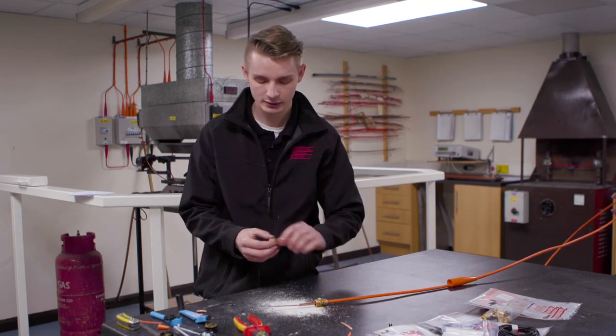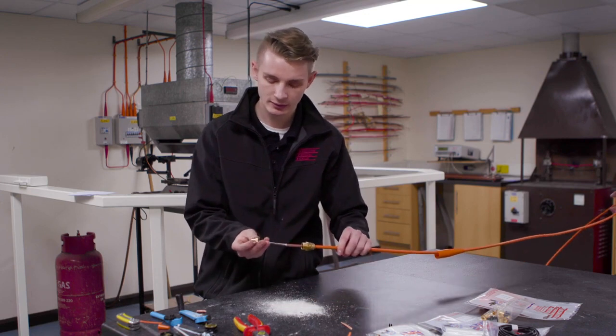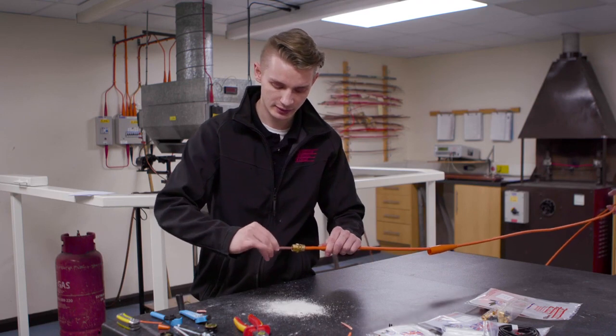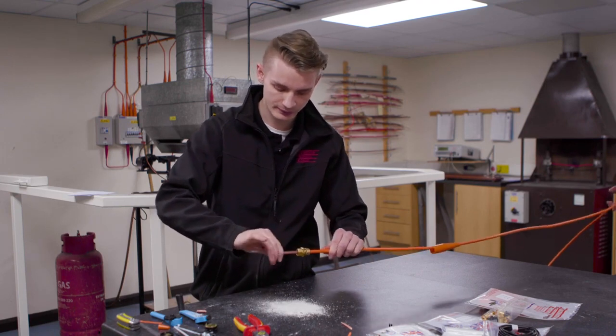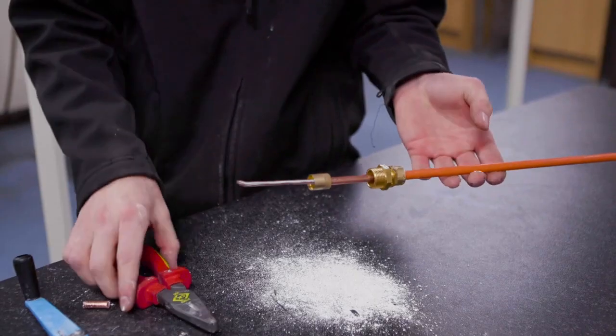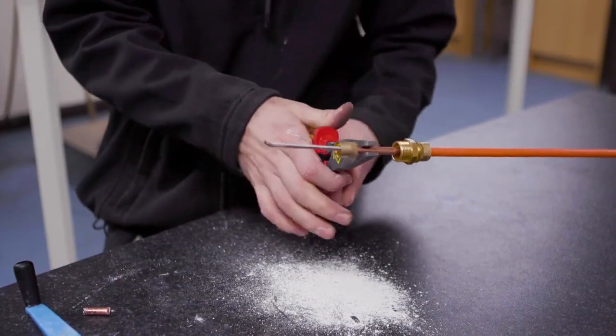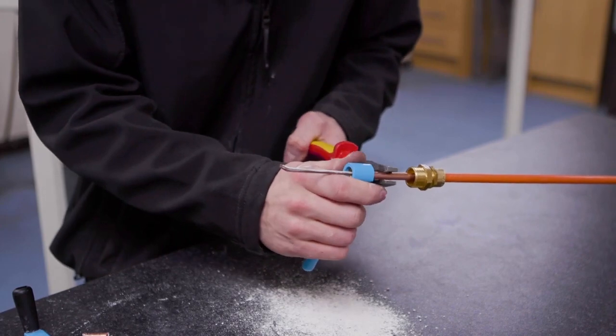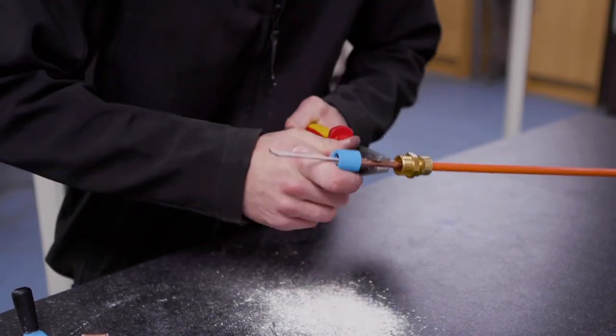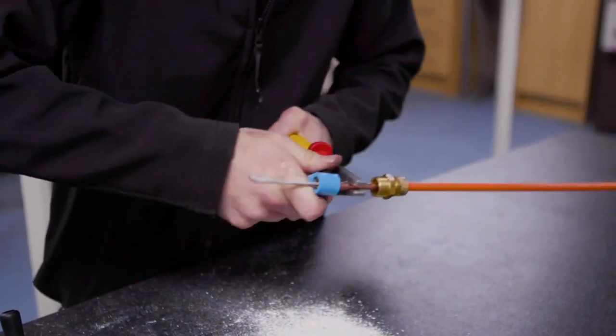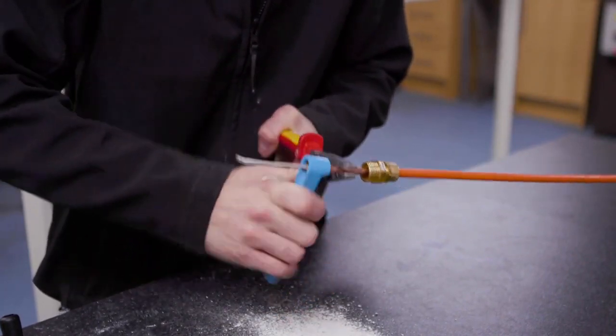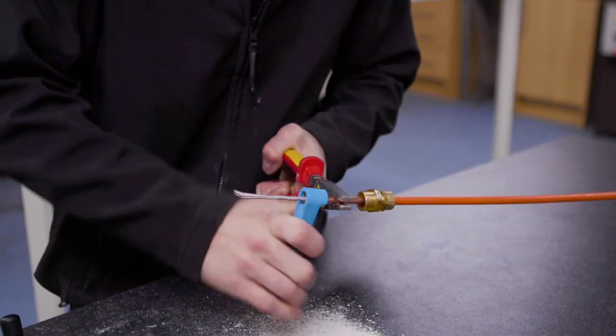Then we'll get our pot, our RPS pot, pop it over the top and start it by hand until you feel it just grab. Then we'll take our pliers and our pot wrench and then push in whilst you're tightening, just tighten it all the way until you have about one millimetre of sheath showing inside of your pot.